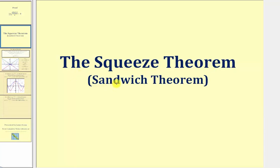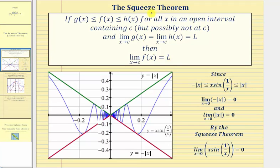Welcome to an explanation of the squeeze theorem, sometimes referred to as the sandwich theorem. The squeeze theorem states that if f of x is greater than or equal to g of x and less than or equal to h of x for all x in an open interval containing c, but possibly not at c, and the limit as x approaches c of g of x equals the limit as x approaches c of h of x, which both equal L, then it follows the limit as x approaches c of f of x also equals L.